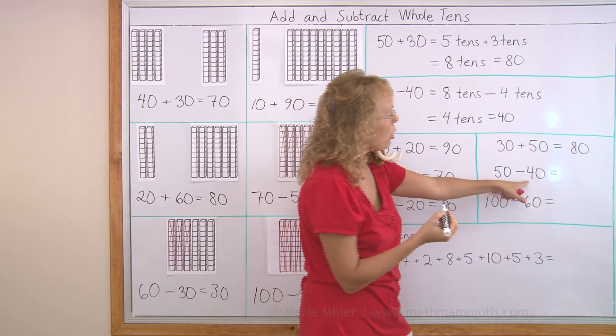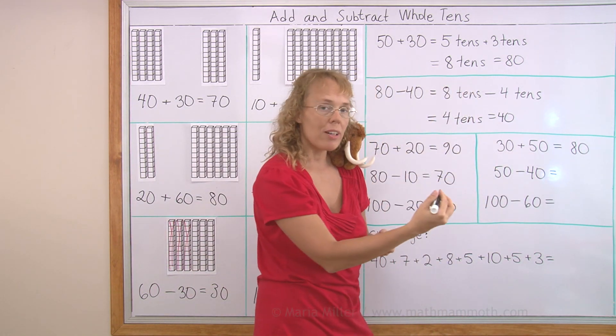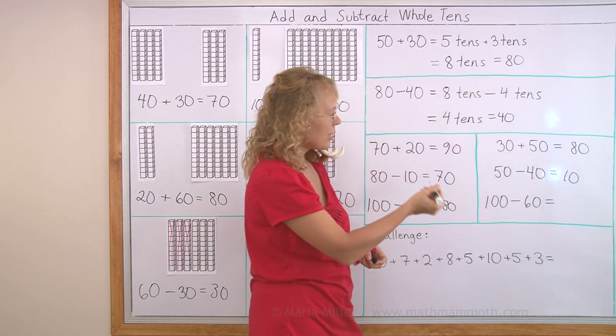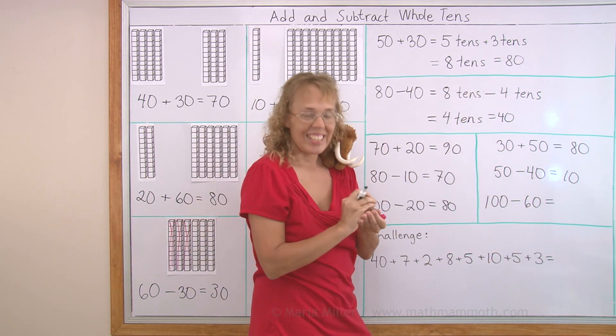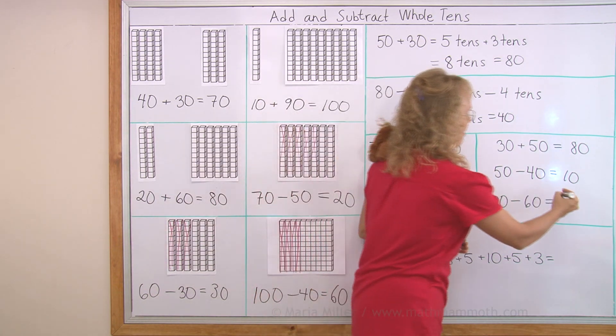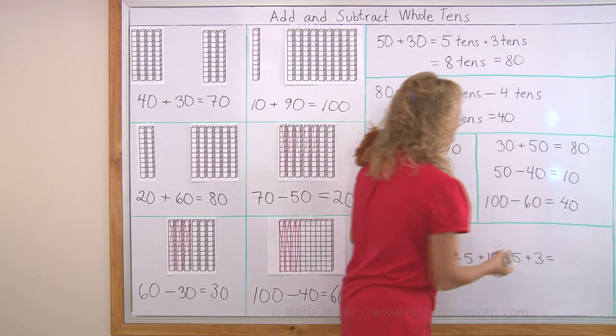And then fifty minus forty. Think of five minus four. We get one ten left. And then hundred minus sixty. Again think of ten tens minus six tens. Ten minus six. Four. Four tens are left. Forty.